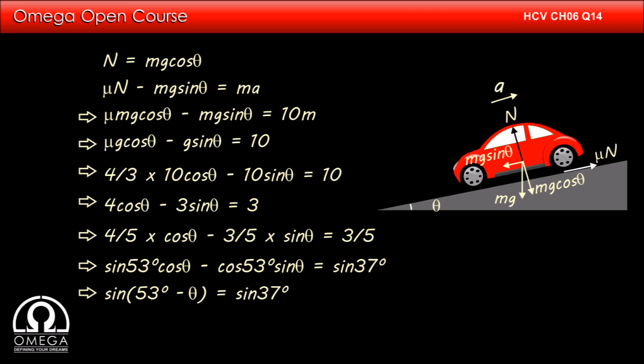Which implies sin 53 degree minus theta is equal to sin 37 degree. This implies 53 degree minus theta is equal to 37 degree or theta is equal to 16 degrees. This is our answer.